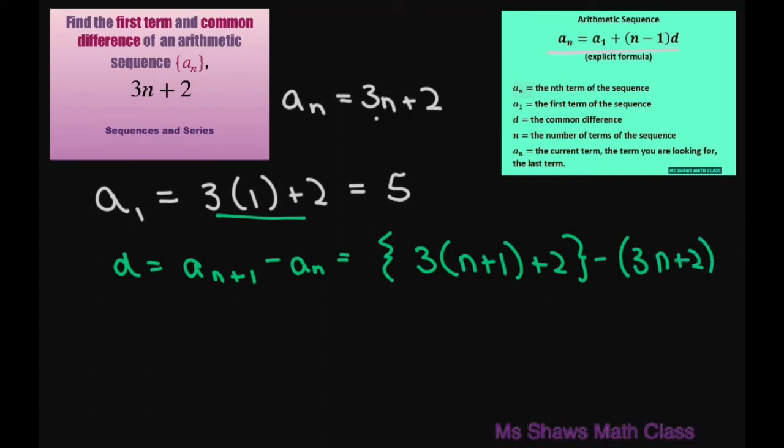All right now this is going to be equal to 3n plus 3 plus 2 minus 3n minus 2. So all this cancels out and your common difference is going to be 3.